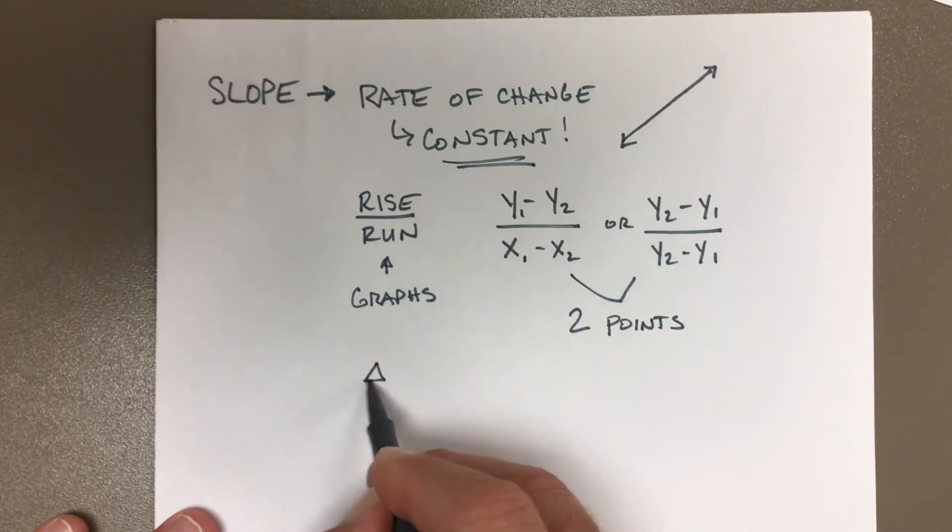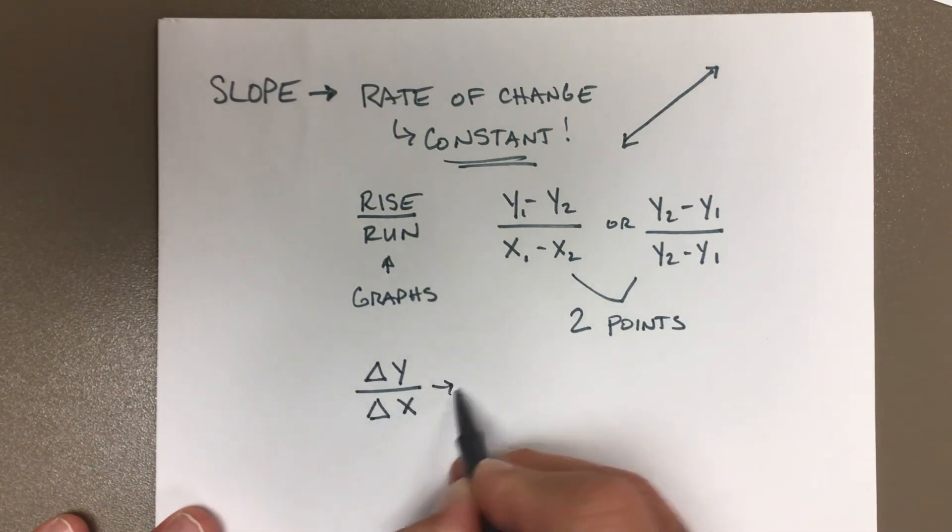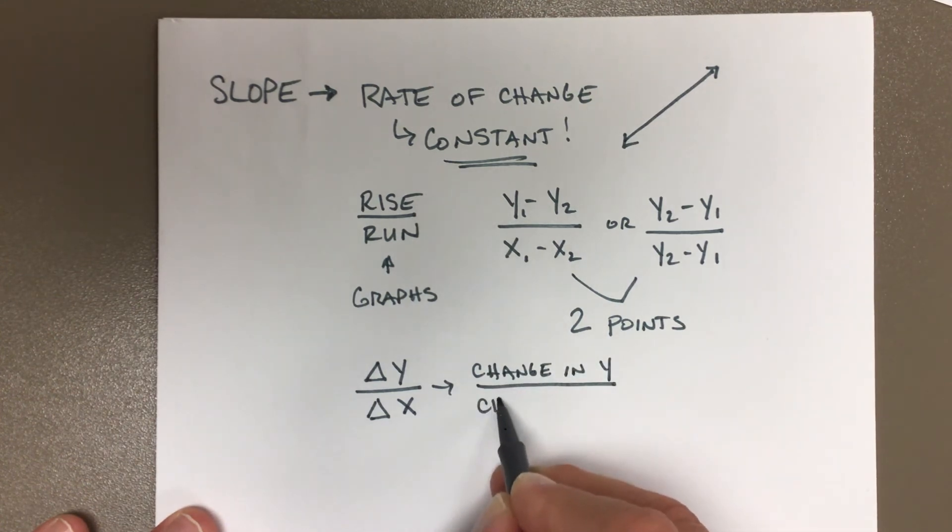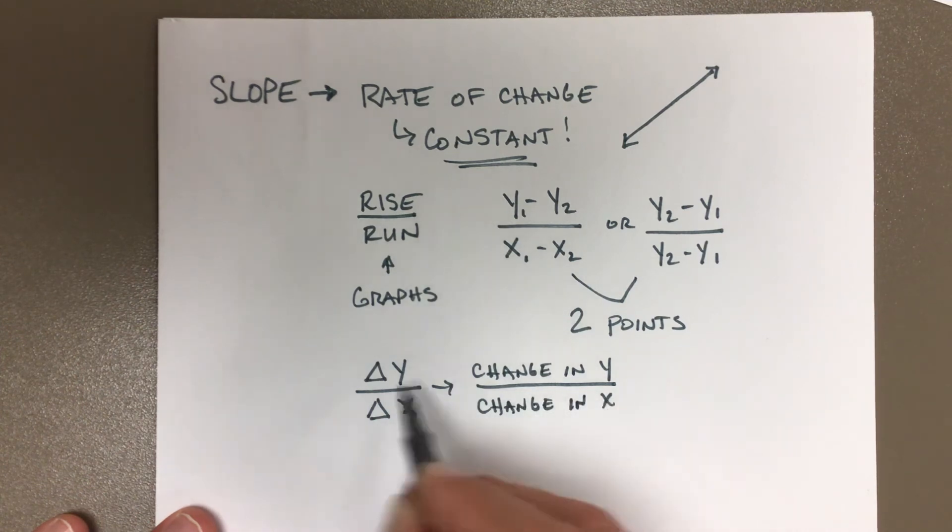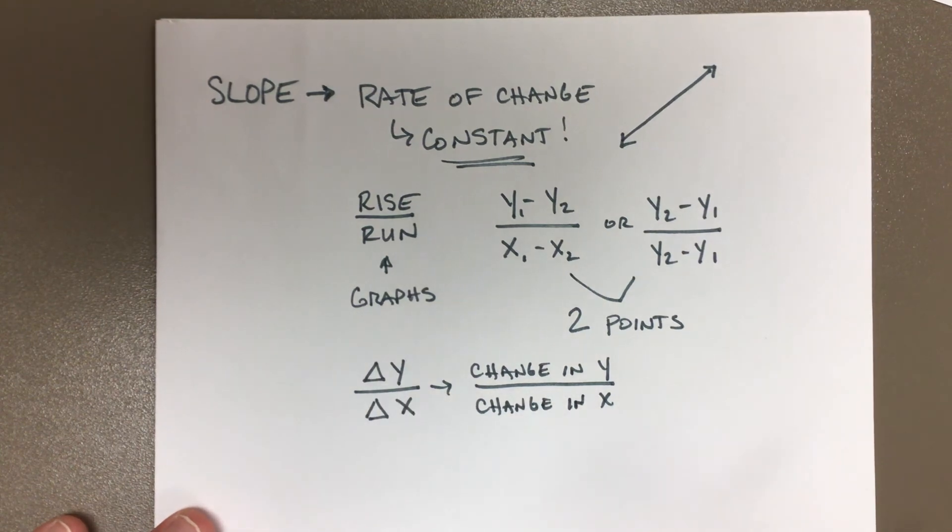thing, and this is where the cool math people draw little triangles. This just means the change in y over the change in x. This is called delta—delta in the math world means change.